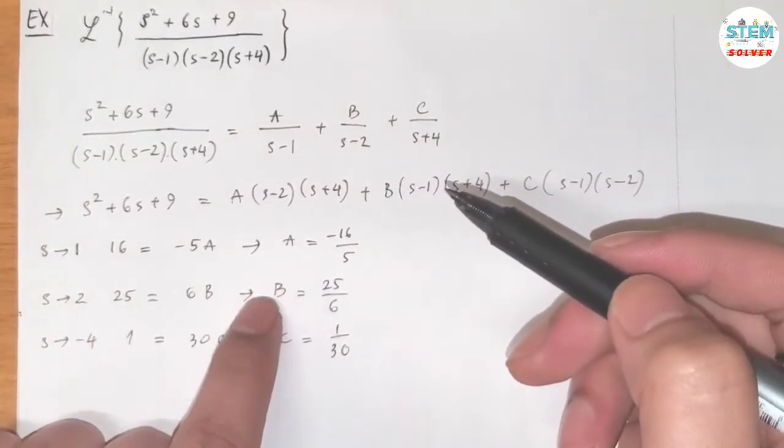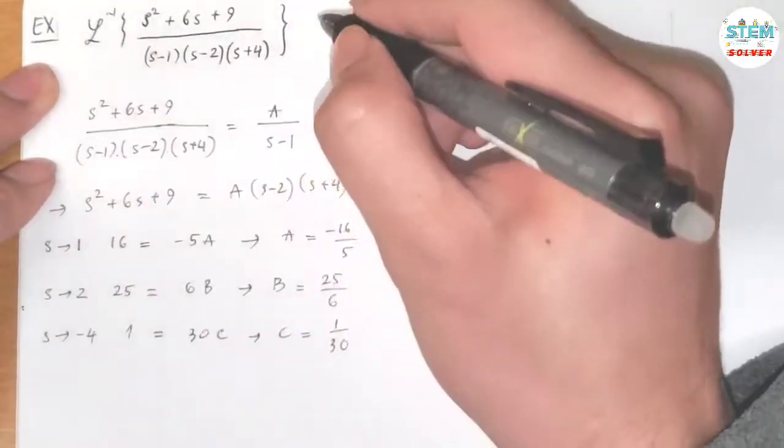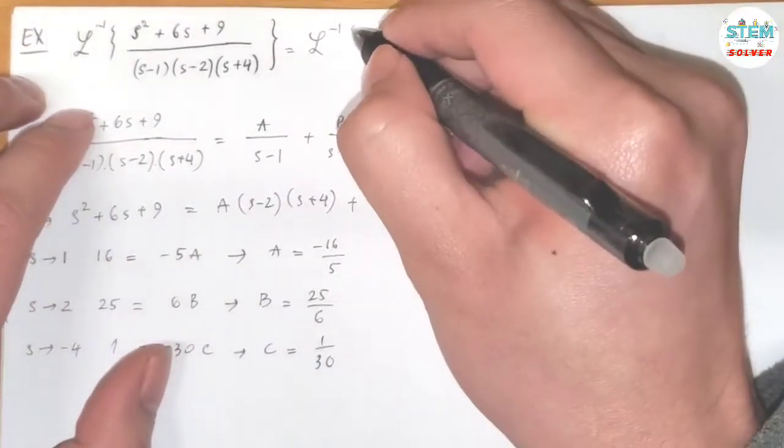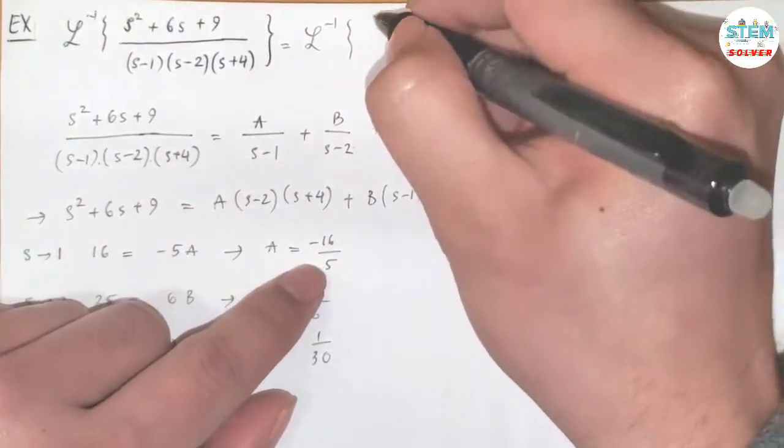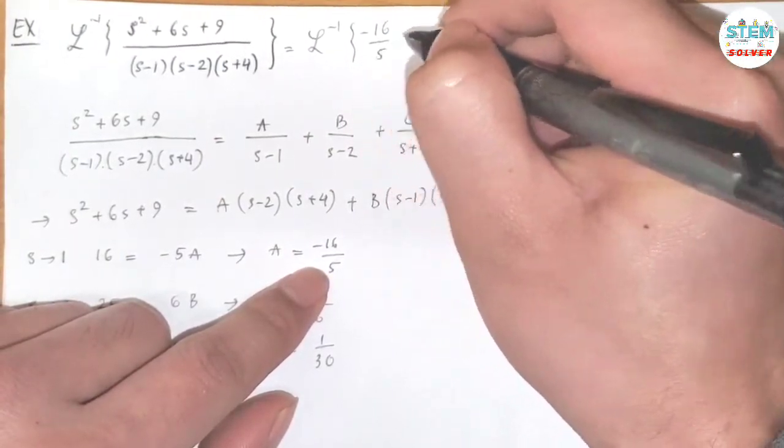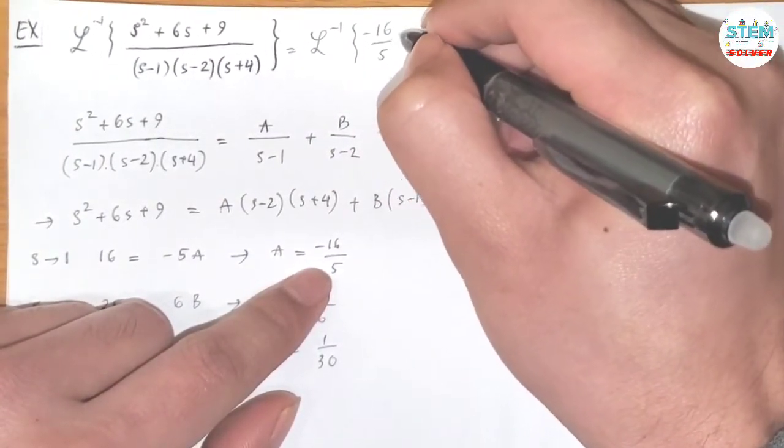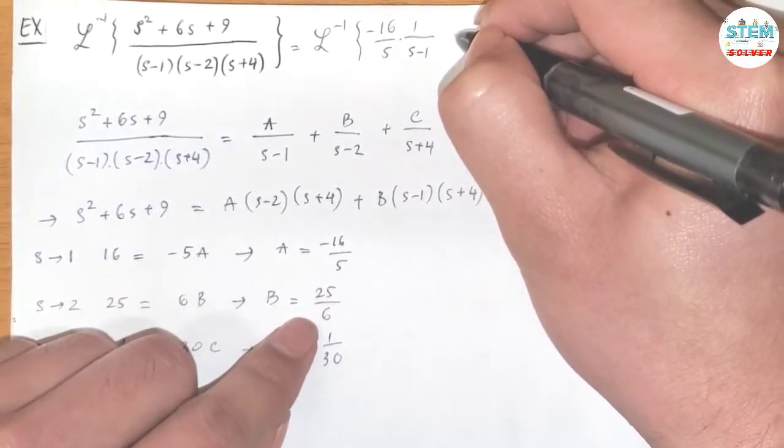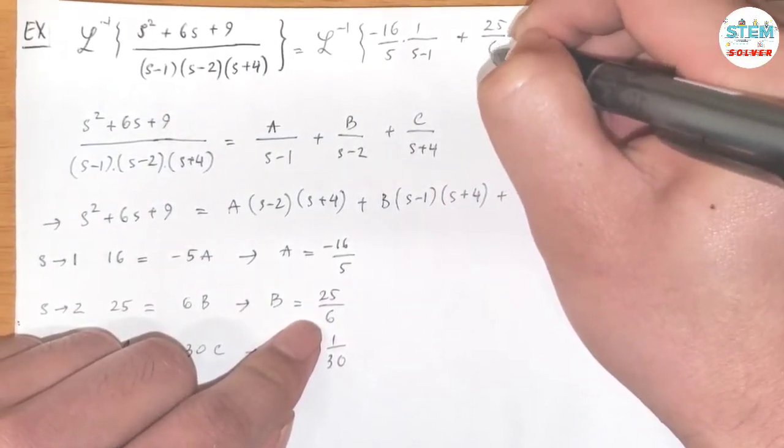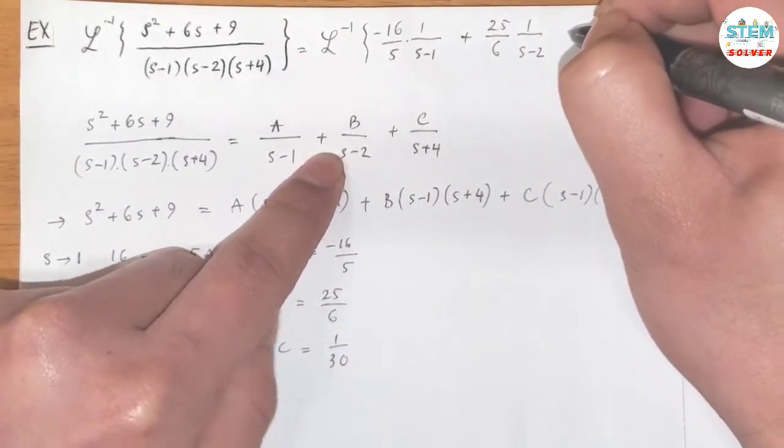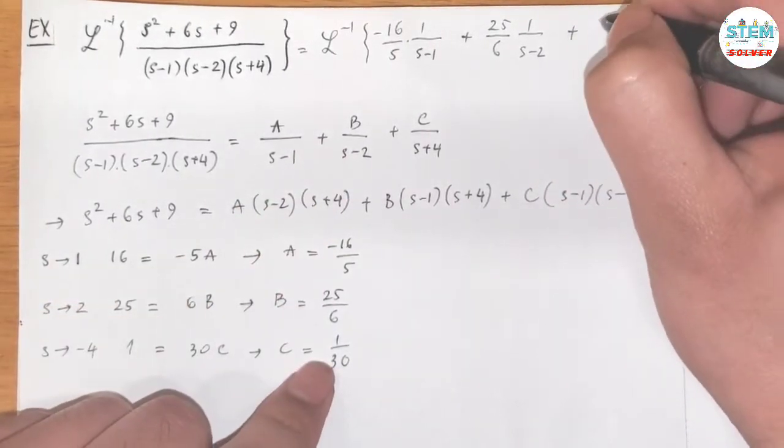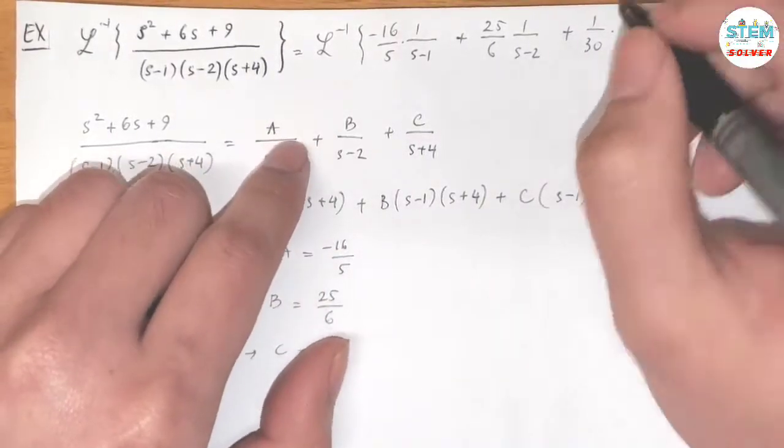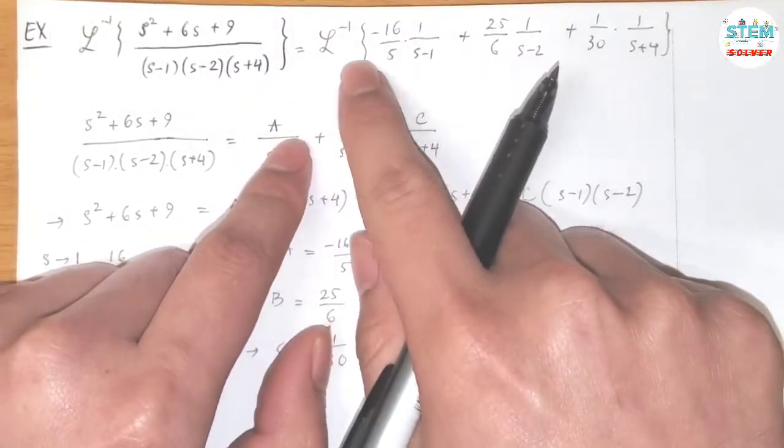Now I'm going to plug A, B, and C into this one. So up here, I have the inverse of negative 16 over 5 times 1 over (s minus 1) plus 25 over 6 times 1 over (s minus 2) plus 1 over 30 times 1 over (s plus 4). This is the inverse of this.